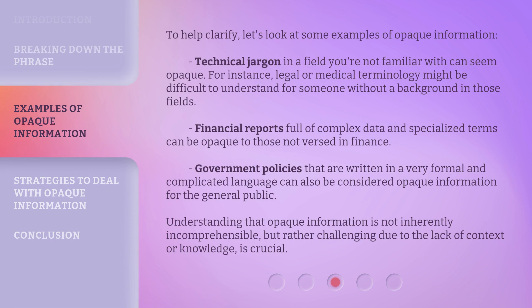To help clarify, let's look at some examples of Opaque Information. Technical jargon in a field you're not familiar with can seem opaque. For instance, legal or medical terminology might be difficult to understand for someone without a background in those fields. Financial reports full of complex data and specialized terms can be opaque to those not versed in finance. Government policies written in very formal and complicated language can also be considered Opaque Information for the general public. Understanding that Opaque Information is not inherently incomprehensible, but rather challenging due to the lack of context or knowledge, is crucial.